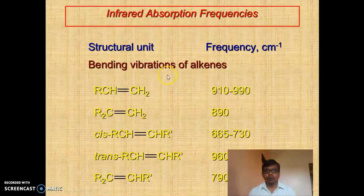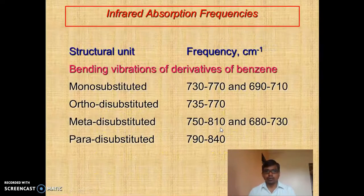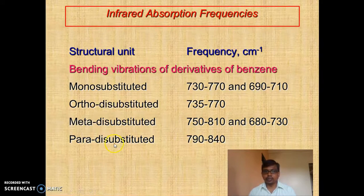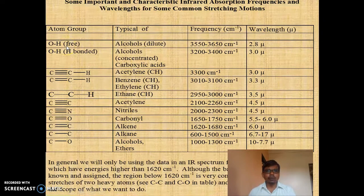For bending vibrations, less vibrational frequency is required. For benzene ring substitution patterns: monosubstituted gives two peaks in a certain region; ortho-disubstituted gives one peak; meta-disubstituted gives two peaks; and para-disubstituted gives one peak in its region. These differences are due to the bending vibrations of the C-H bonds.